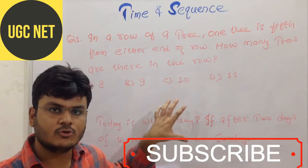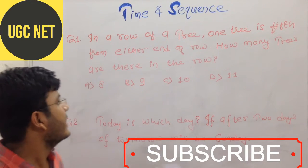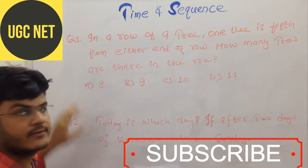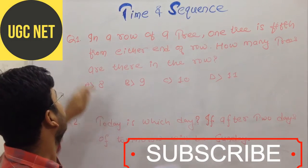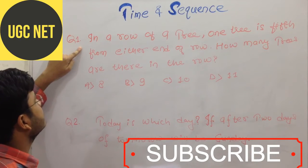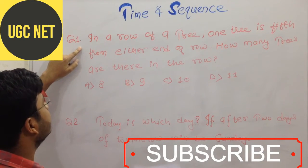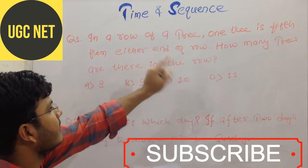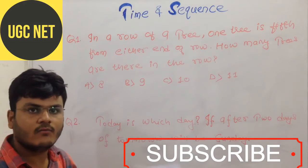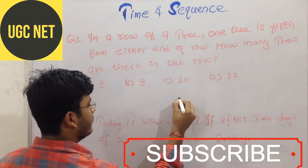So we will discuss some questions from them. I have chosen a couple of questions here. Now this is a sequence question which asks: in a row of a tree, one tree is fifth from either end of a row. There is a row of tree, one row of tree.